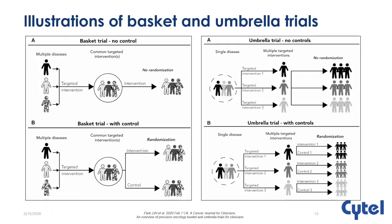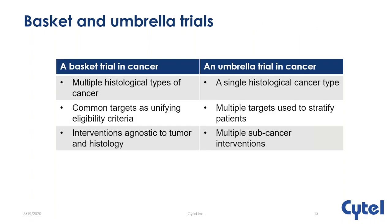Comparing basket and umbrella trials side by side: basket trials usually involve multiple diseases within a single basket, whereas umbrella trials involve a single disease stratified into multiple sub-diseases based on molecular alterations. Umbrella trials aim to identify sub-cancer targeted therapies, whereas basket trials aim to identify tumor agnostic therapies that can be applied to multiple diseases sharing a common target.